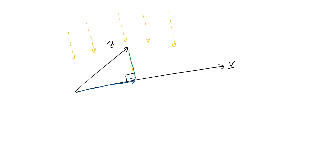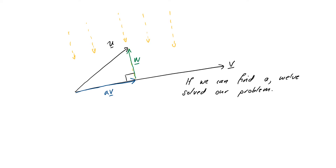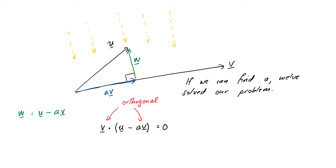Let's set this up mathematically. We can see that the shadow is just a scalar multiple of v, and we'll call this scalar a. If we can find a, we've solved our problem. So the vector difference between u and av we'll call w — w is u minus av. To make this orthogonal to v, we'll require the dot product with v to be zero. So v dot (u minus av) must equal zero. That says v is orthogonal to u minus av, which is vector w.